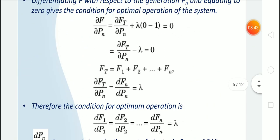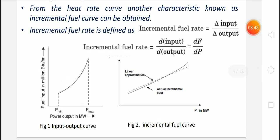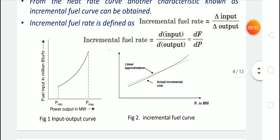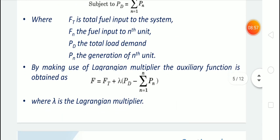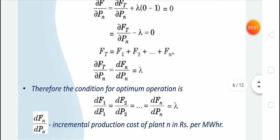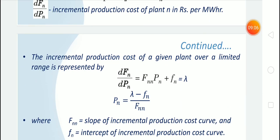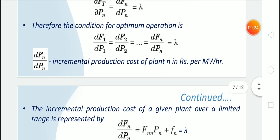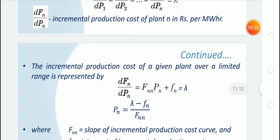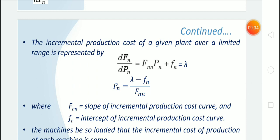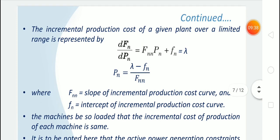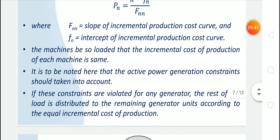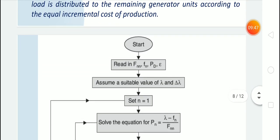The optimality condition means dF1/dP1 = dF2/dP2 = ... = dFn/dPn = lambda, where dFn/dPn is the incremental production cost. For optimum operation of the system, the incremental production cost of each plant should be equal. From the incremental production cost curve, which is linear (y = mx + c), we can write dFn/dPn = beta_n * Pn + gamma_n, where beta_n is the slope and gamma_n is the intercept. Since dFn/dPn = lambda, we get Pn = (lambda - gamma_n) / beta_n.